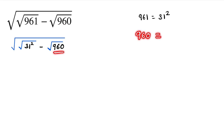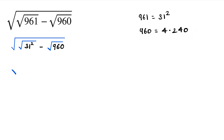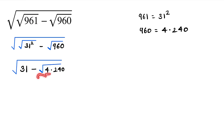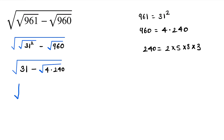So we put the value: under root 31 minus under root of 4 into 240. Now 4 comes out from the under root, giving us 2. And 240 can be written as 2 into 5 into 8 into 3.